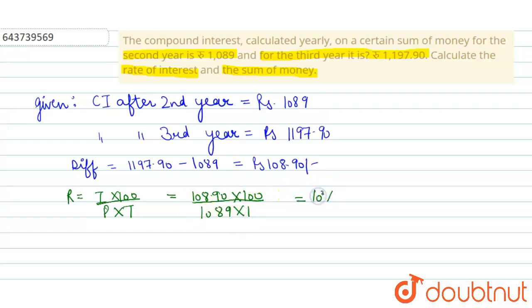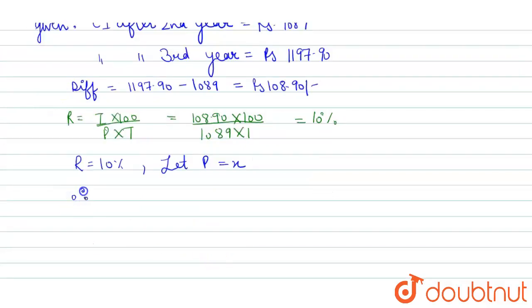Now we have 10% as a rate of interest. We can find out the principal, sum of money. For finding the sum of money, we have rate equals 10% and we will let the principal. So let principal equals X. Therefore,